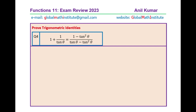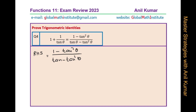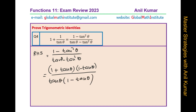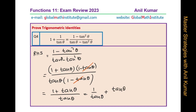Now we have another question: 1 plus 1 over tan theta equals (1 minus tan squared theta) over (tan theta minus tan squared theta). Begin with the right hand side, which is more complicated. Using difference of squares factoring on the top gives (1 plus tan theta)(1 minus tan theta) in the numerator, and in the denominator we can factor out tan theta to get (tan theta)(1 minus tan theta). The 1 minus tan theta cancels and we are left with (1 plus tan theta) divided by tan theta, which is 1 over tan theta plus 1, which is the left hand side.